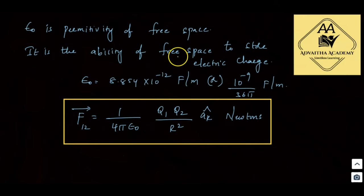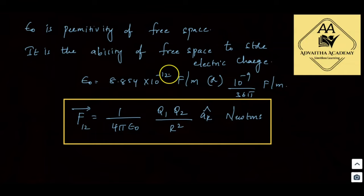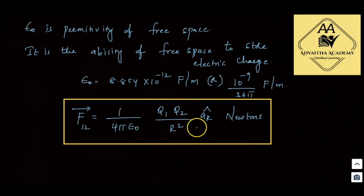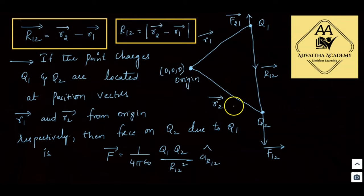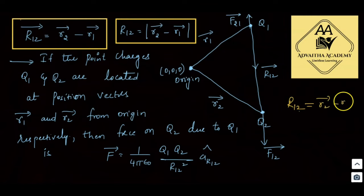Epsilon naught is the permittivity of free space — the ability of free space to store electric charge — with value 8.854 × 10⁻¹² F/m. Given q1 at r1-bar and q2 at r2-bar, the vector r12-bar = r2-bar − r1-bar (final point minus initial point). The magnitude r12 = |r2-bar − r1-bar|, and the unit vector a-r12 = r12-bar / |r12-bar|.